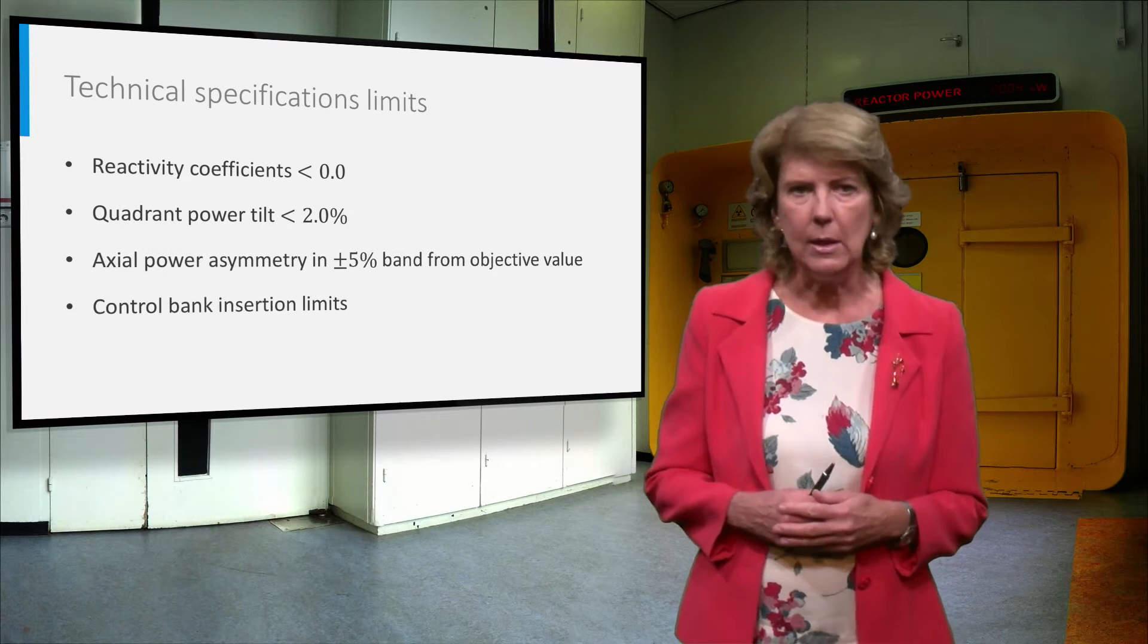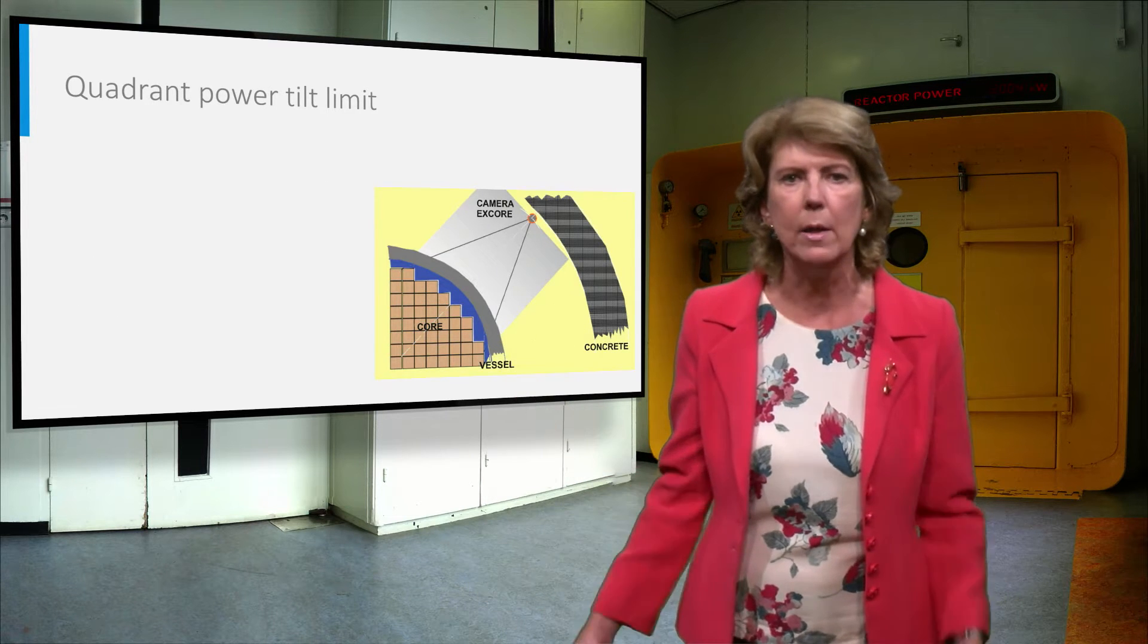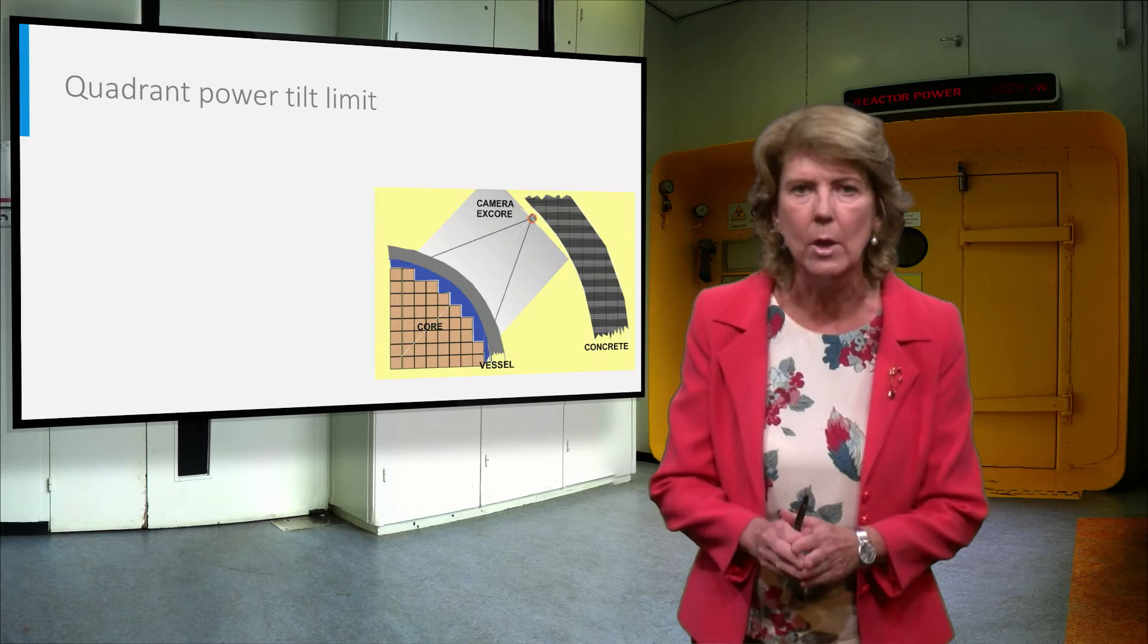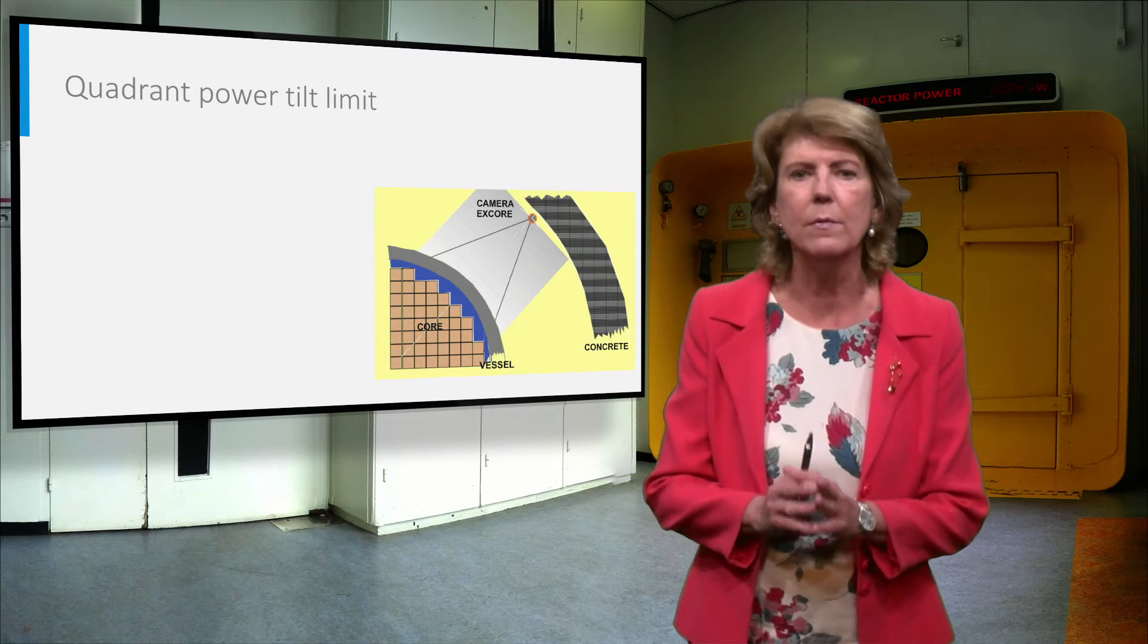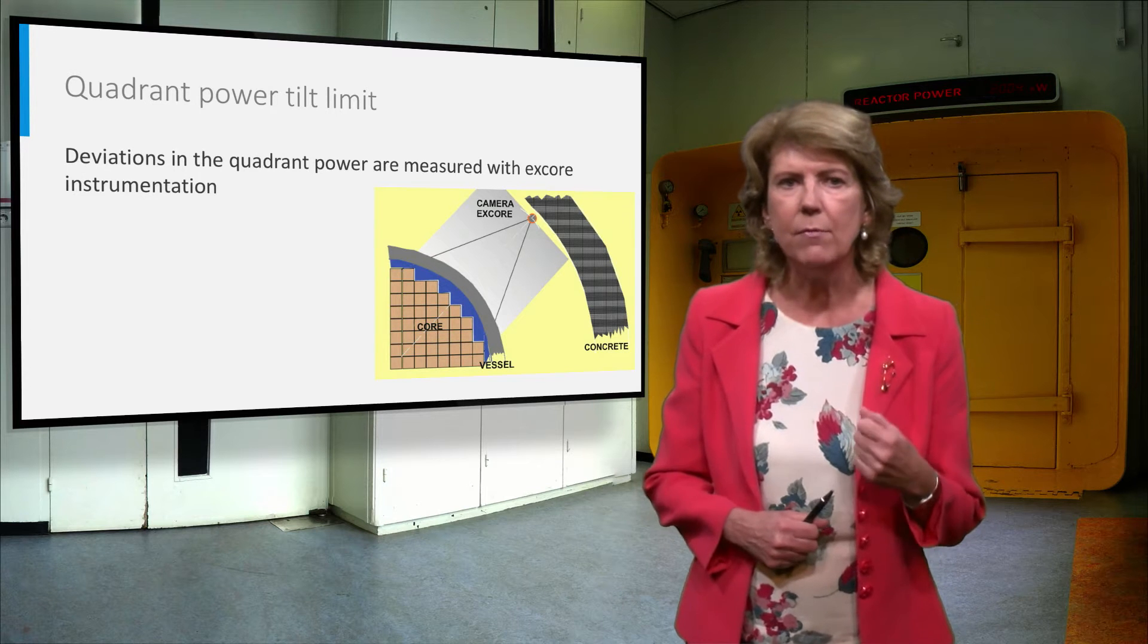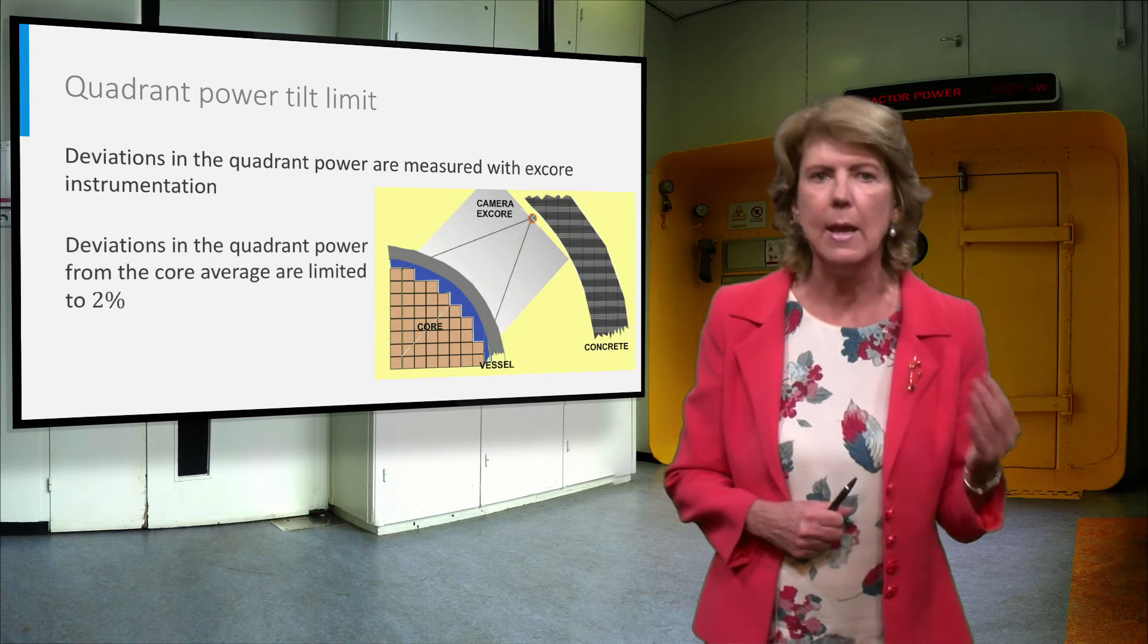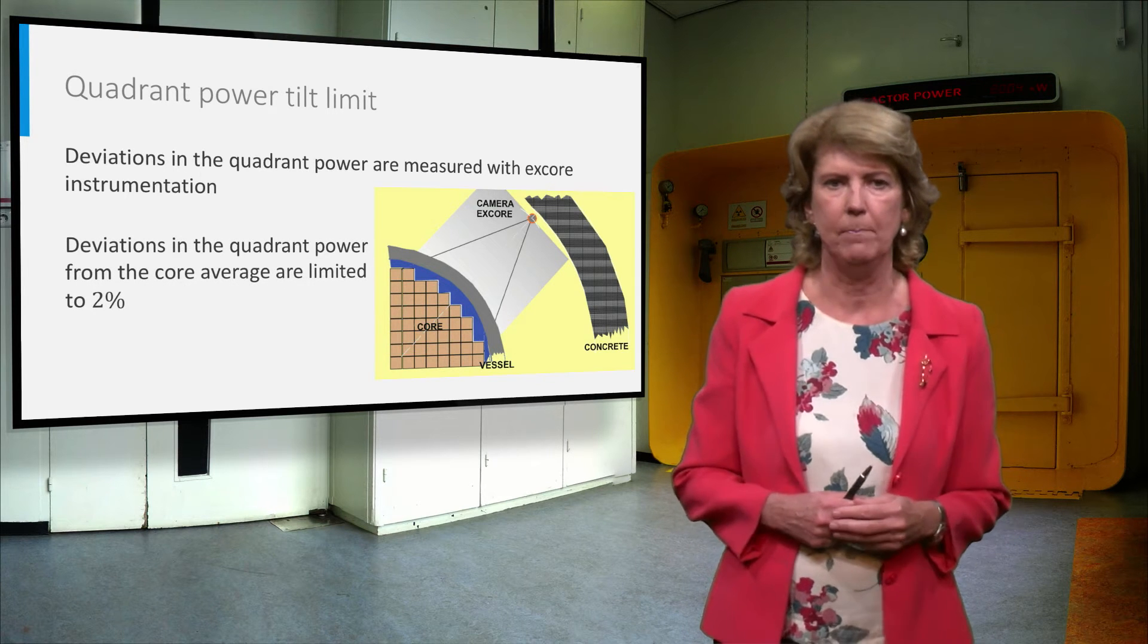The quadrant power tilt is defined as the difference between the average power in one quadrant of the core and the average power of the full core. This value is taken from the core instrumentation and should be less than 2%.